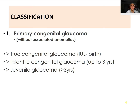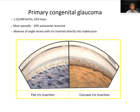The different classifications include primary congenital glaucoma, which is a true congenital glaucoma from intrauterine life to birth, then infantile congenital glaucoma up to three years, and juvenile glaucoma greater than three years. Primary congenital glaucoma is seen in one in 10,000 births, 65% are boys, it is more sporadic, and 10% are autosomal recessive.